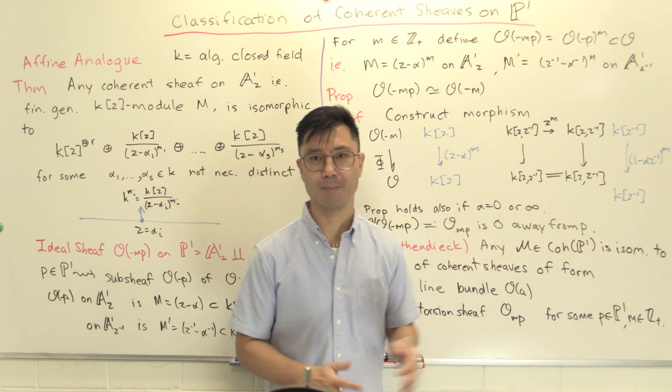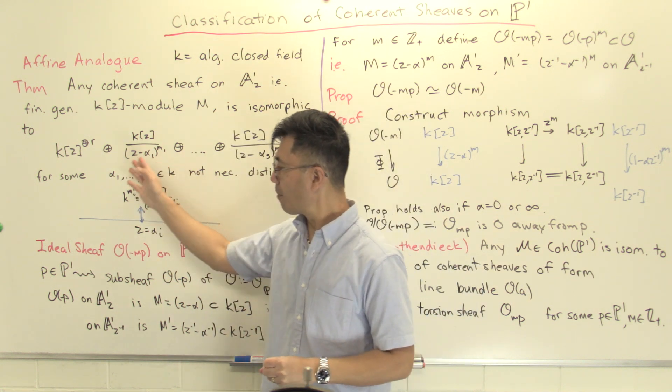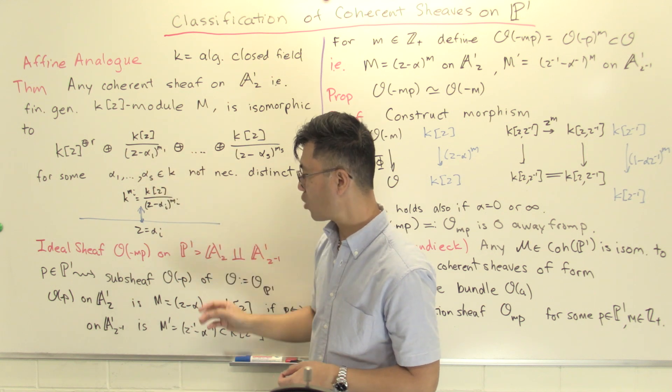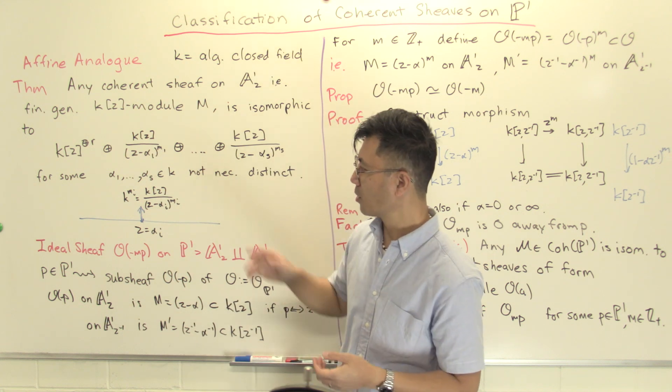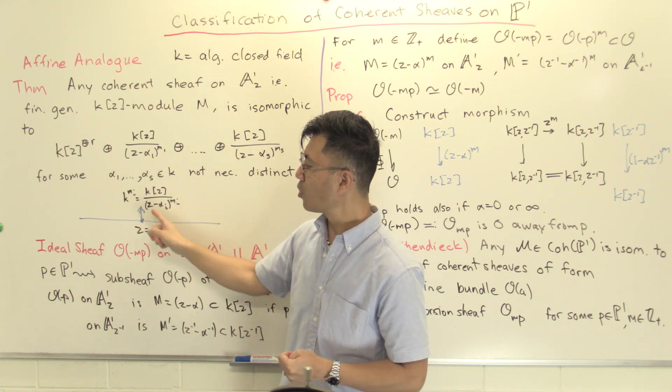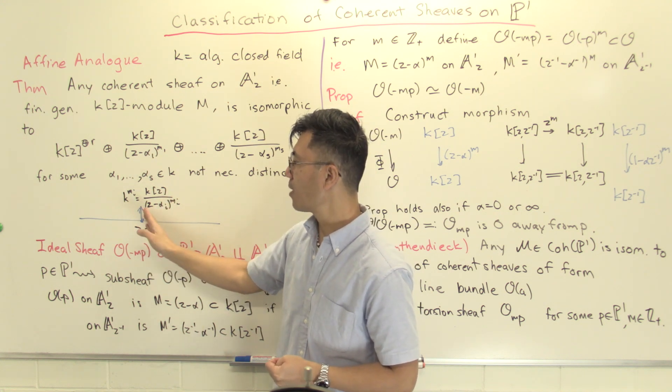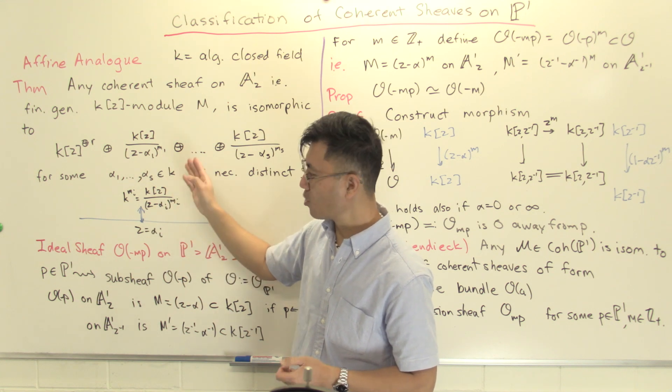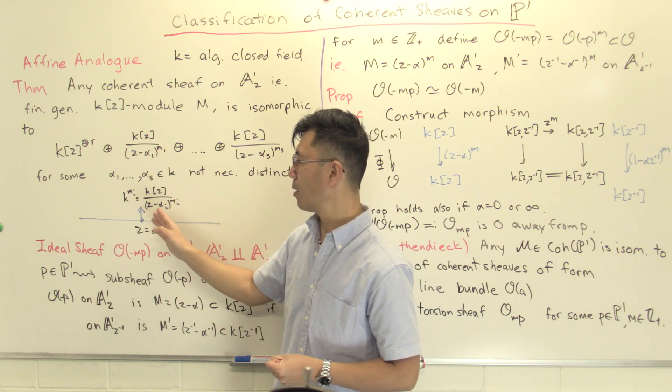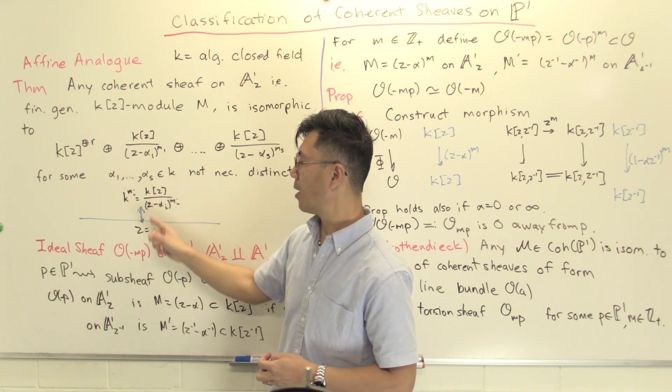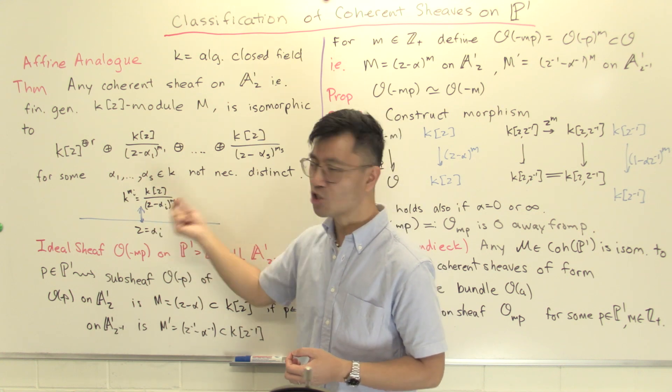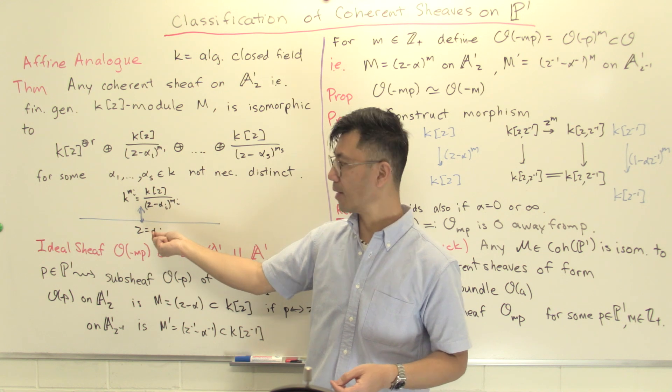What can we say about this sheaf? We can say this sheaf is zero away from p. The picture we have of O_mp is that it's zero away from p. The argument is just as what you see in the affine case, except you have to check on both patches, the A1_Z patch and the A1_{Z^{-1}} patch. To see what this sheaf looks like away from Z=α, you have to invert Z-α. When you invert that, since Z-α becomes a unit, and Z-α acts nilpotently on this, that means this module has to be zero in that localization. This is rather nice, and the way we describe it in algebraic geometry is that this sheaf O_mp is supported at this point p; it's zero away from it.